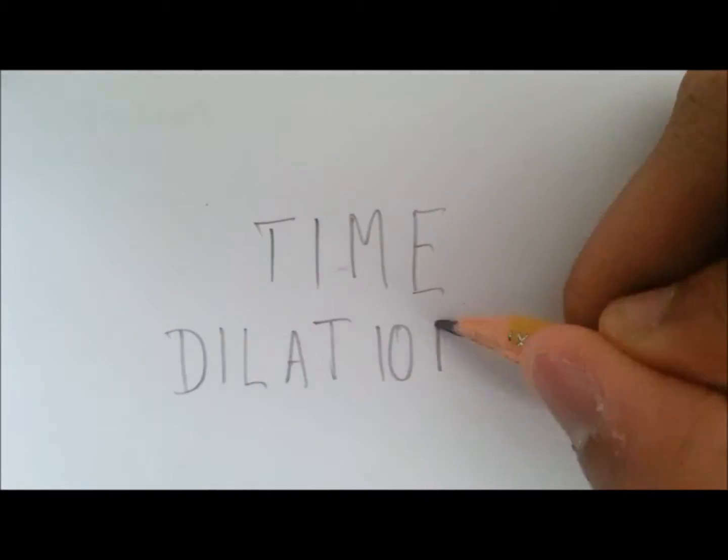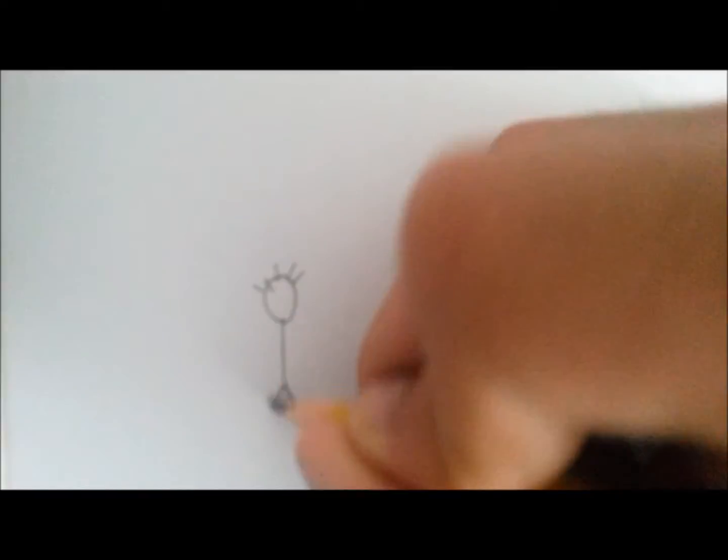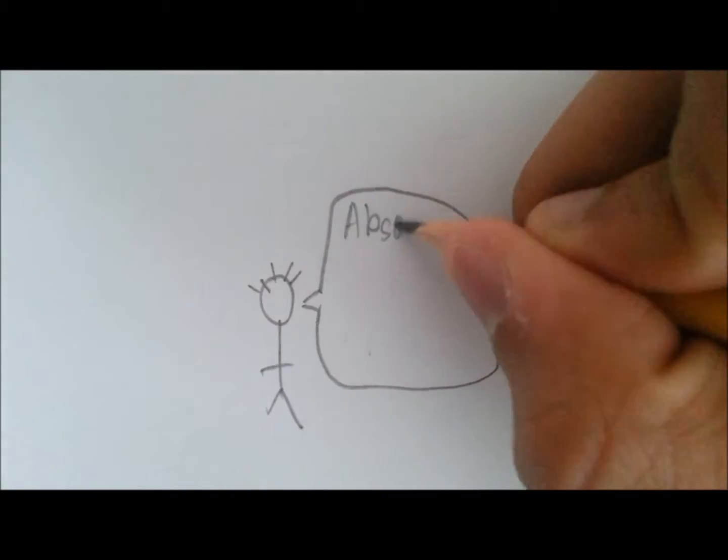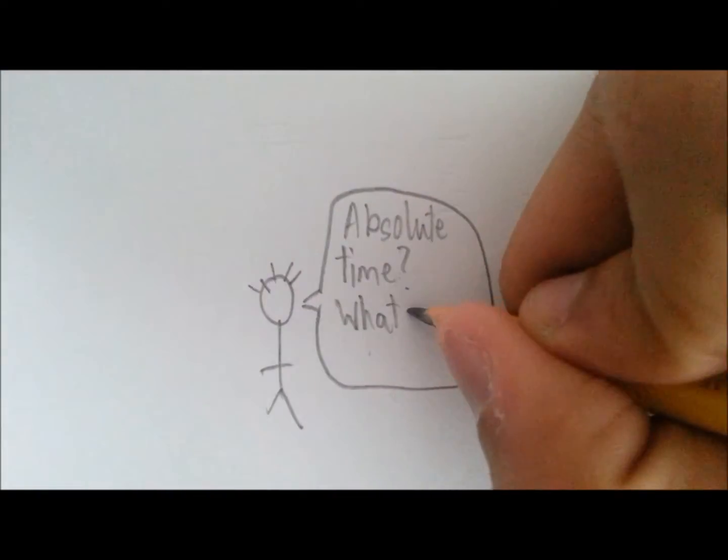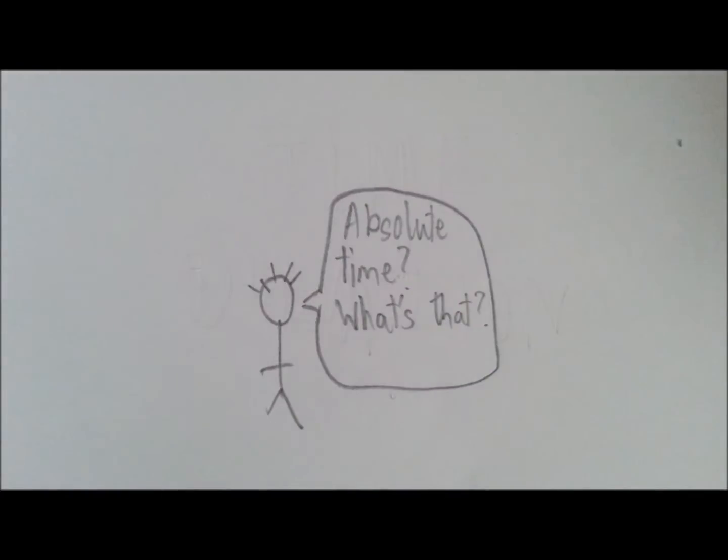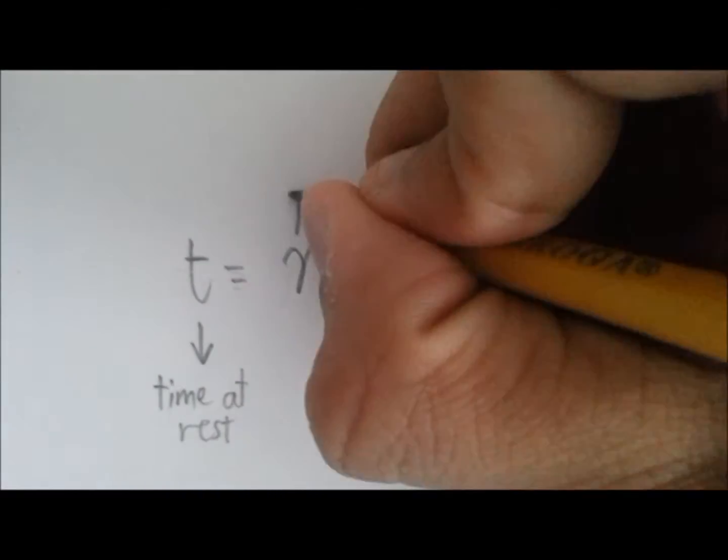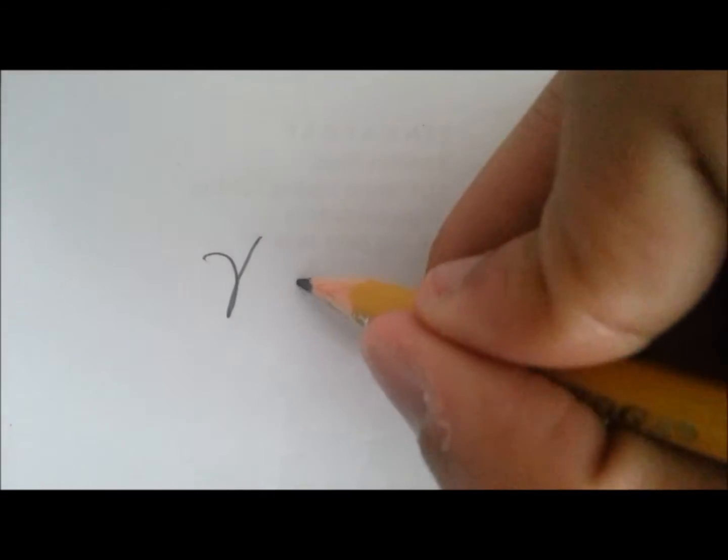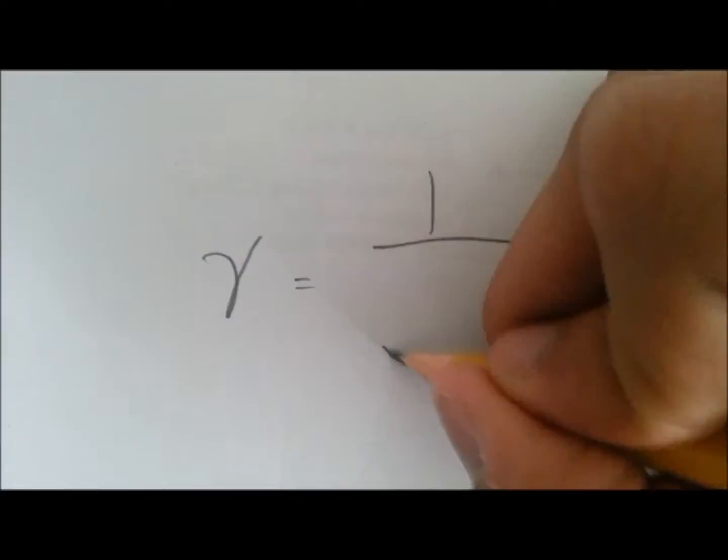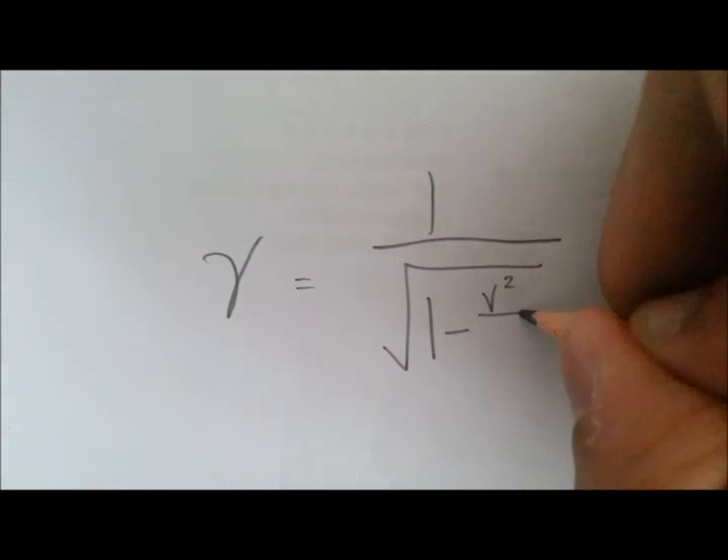One consequence is time dilation. Time dilation is a result of the lack of an absolute time since that for any object in motion, time passes slower. The relation between the rate of time at rest and at motion is related by the Lorentz factor, a factor that for an object's speed v is equal to 1 over the square root of 1 minus v squared over c squared.